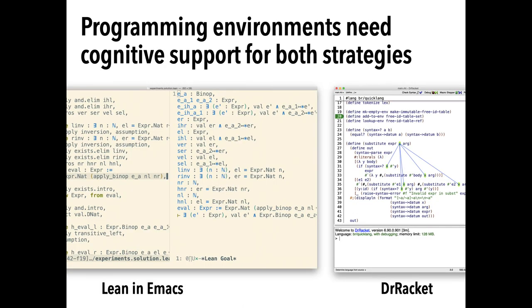Either way, a clear implication for design is that programming environments should provide cognitive support for both strategies. For example, showing information about all variables defined before a point as on the left, or showing all later uses of a variable as on the right.